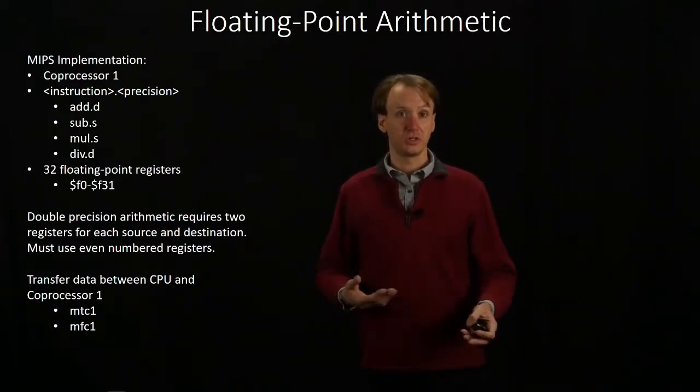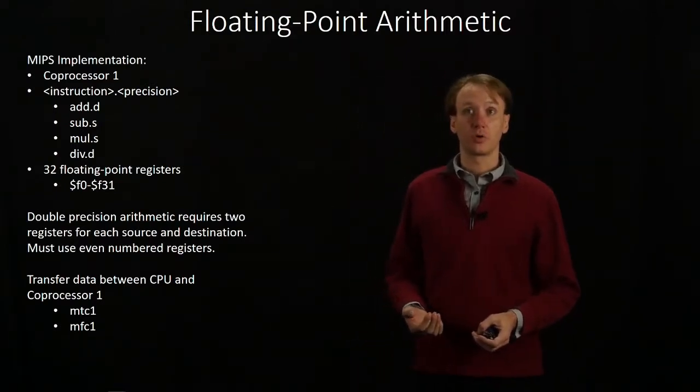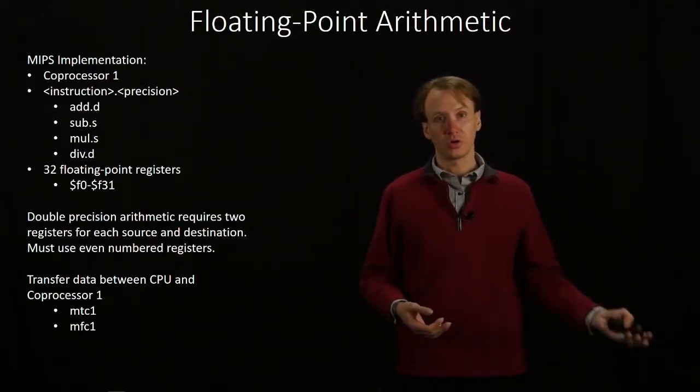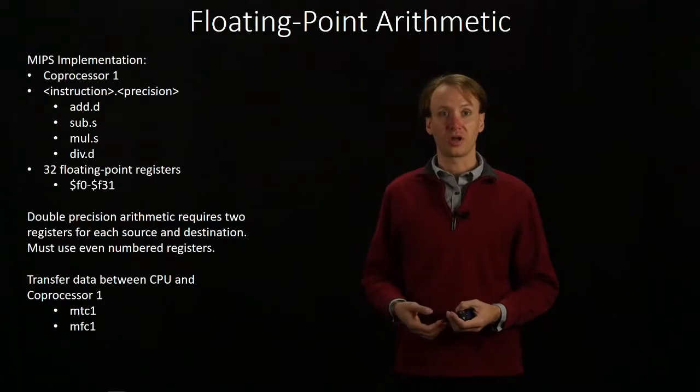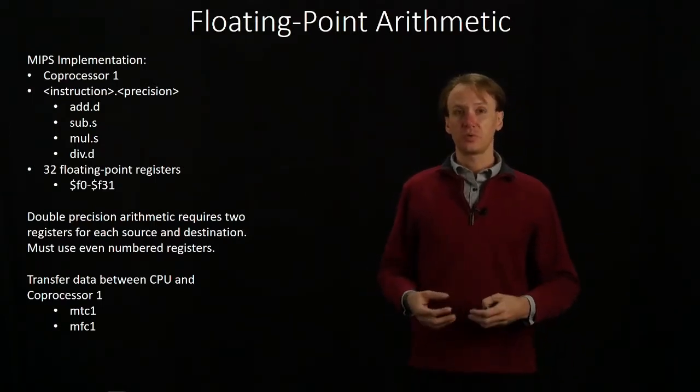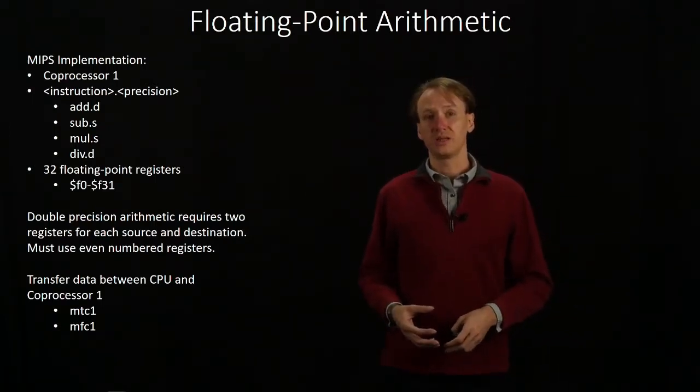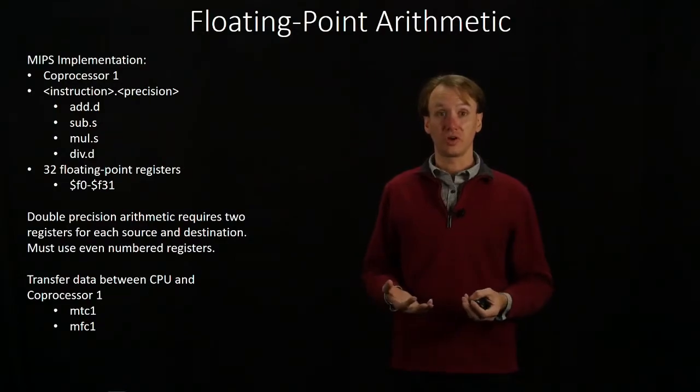These will allow us to transfer 32 bits at a time. So if we're going to transfer a double, then we're going to have to make two transfer operations either way. But this will provide the majority of the things that we need to actually implement floating-point arithmetic.